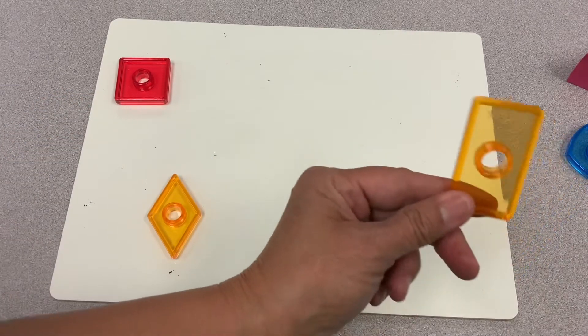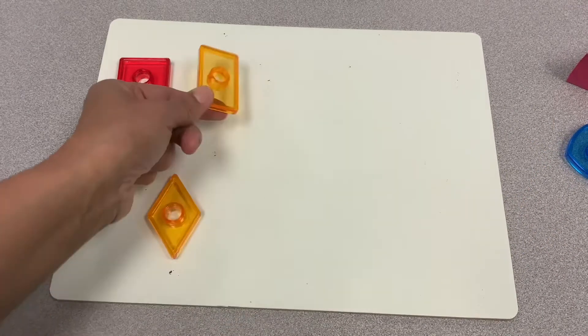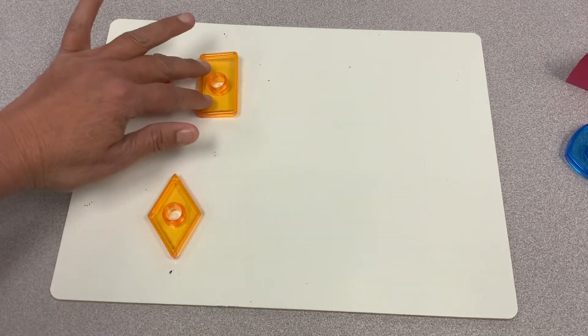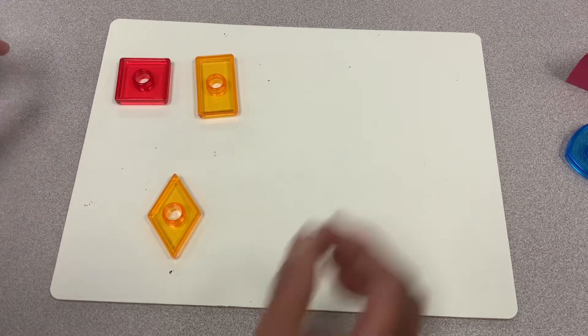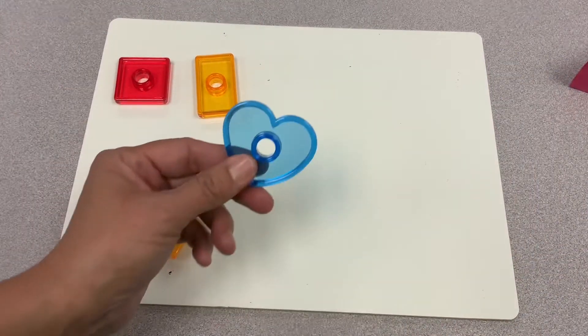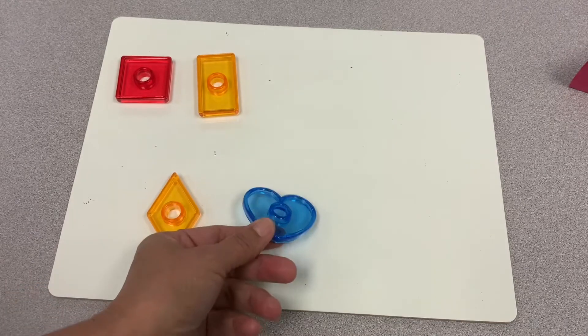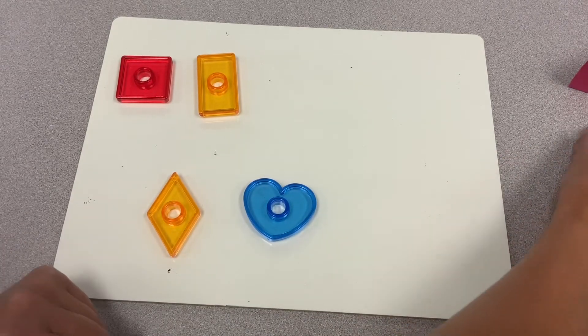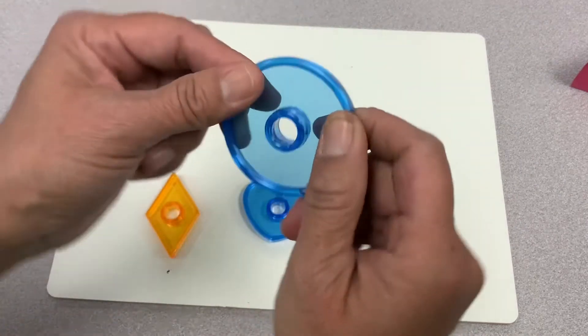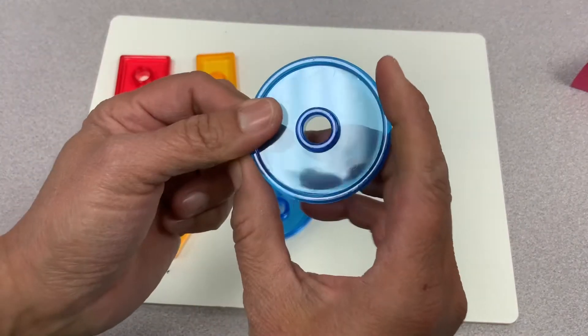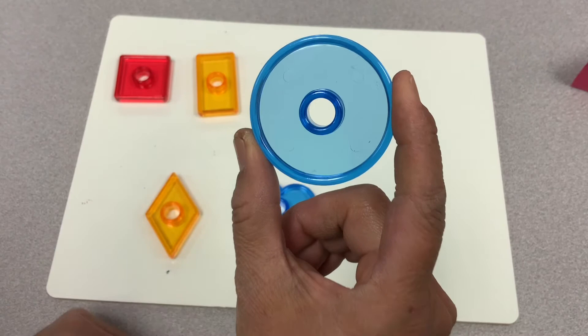And this shape is a rectangle. It has four sides, but two sides are long and two sides are short. Who knows what that shape is? Yes, that's a heart. How about this shape? This is a circle, and it goes round and round. It has no corners, it has no sides.